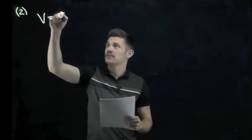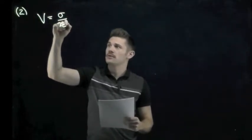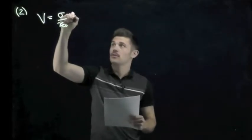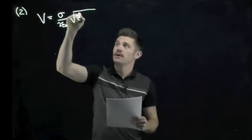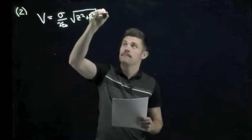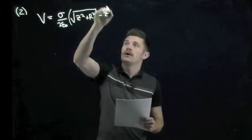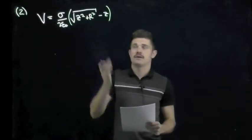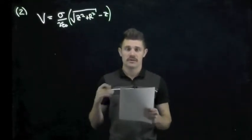So problem two on the midterm said that we have a potential from a charged disk and the potential was given as v equals sigma over two epsilon naught times the square root of z squared plus r squared minus z. Where z is the position that we are on the z axis and r would be the radius of the disk.